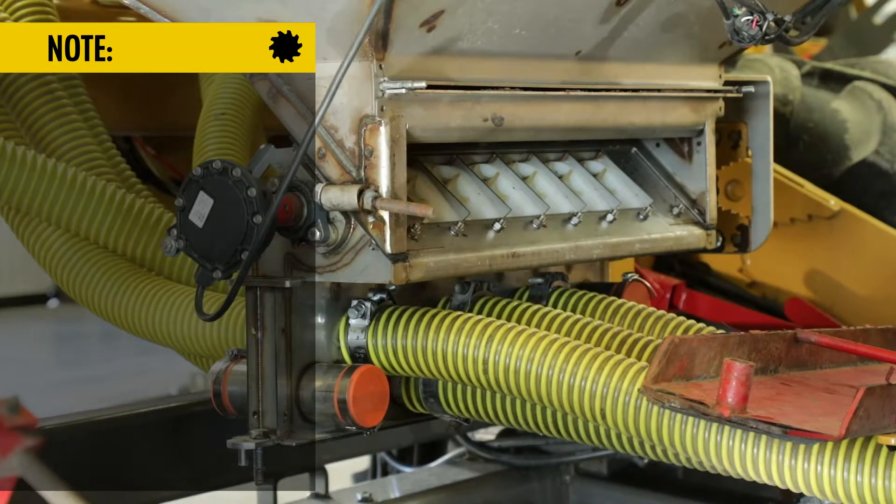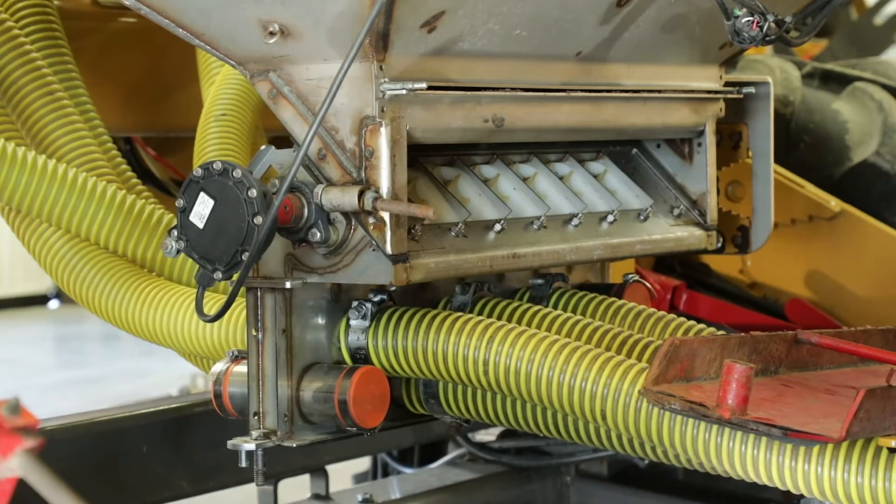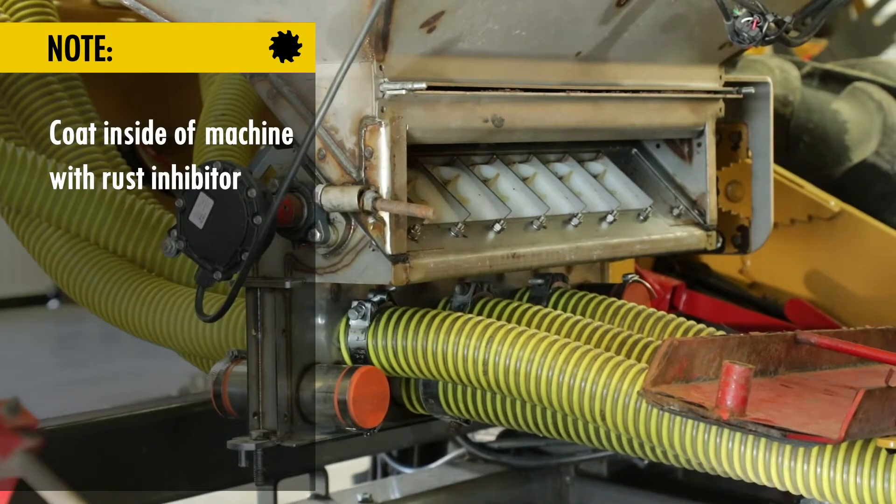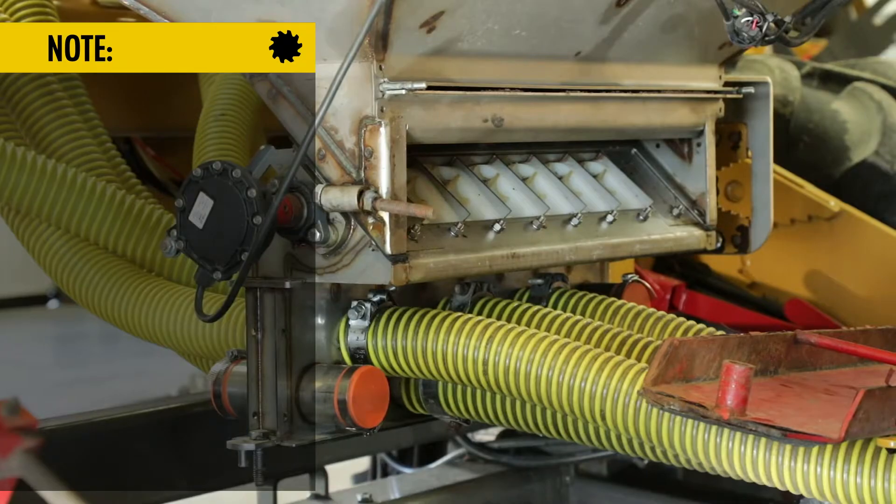Once it is completely dry, coat everything inside the metered bodies, inside the tanks, coat everything with a liberal amount of rust inhibitor.